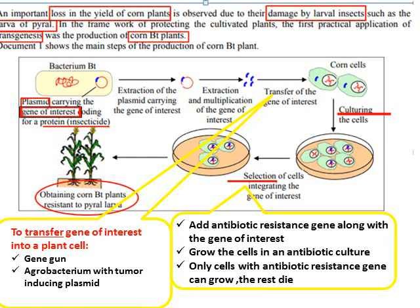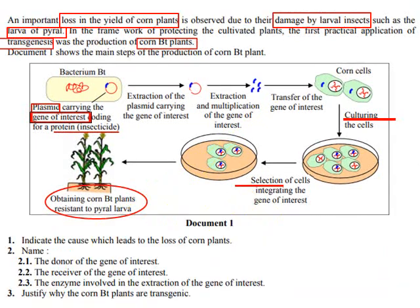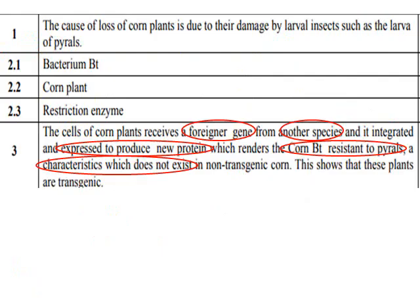We end up having corn Bt plants that are resistant to the pyril larva. Solving the questions: we need to indicate the cause of the loss, the donor, the receiver, and the enzyme involved in extraction of the gene of interest. The cause of the loss in the corn plants is damage by larval insects — the larva of pyril. The donor is the bacteria Bt, because the bacteria is providing the gene of interest, which is a gene that codes for a protein insecticide.